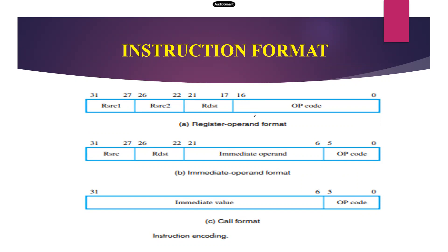The R format instruction is a registered operand format. It is totally 32-bit. The first 16 bits will be allocated for the opcode of the given instruction. The next 5 bits will be allocated for destination, another 5 bits will be allocated for source operand 1, and the last 5 bits will be allocated for source operand 2.